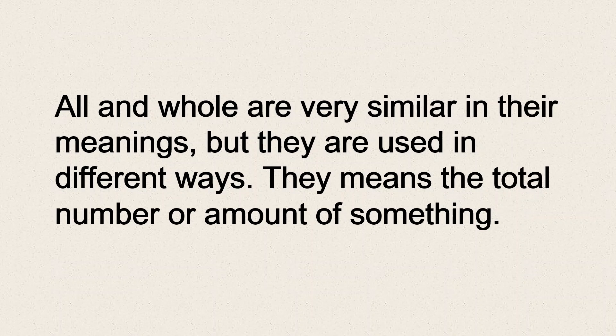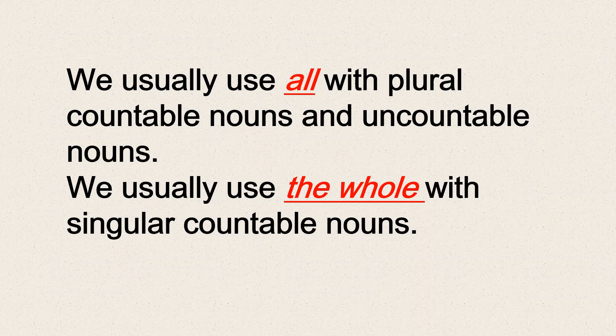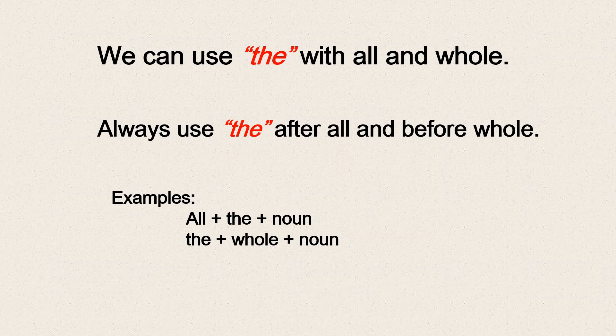They both refer to the total number or amount of something. We usually use 'all' with plural countable nouns and uncountable nouns, and we use 'whole' with singular countable nouns. Regarding the definite article 'the': when using 'all,' the article comes after 'all'; when using 'whole,' the article comes before 'whole.' Always use 'the' with both.